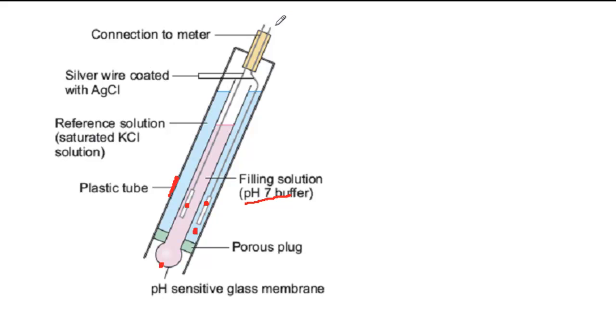The pH probe is connected to some electronics and a meter, which gives a direct readout of the pH of the solution outside. Before you start taking measurements, you need to calibrate the probe against solutions of known pH.